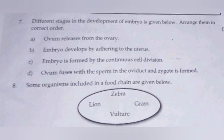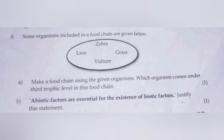Some organisms included in a food chain are given below. Make a food chain using the given organisms. Which organism comes under the third trophic level in this food chain?